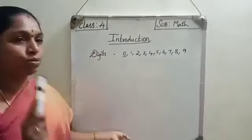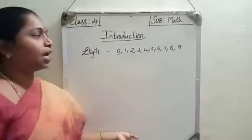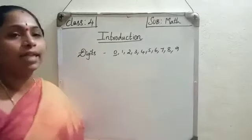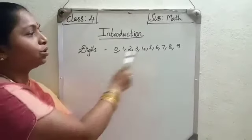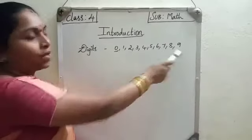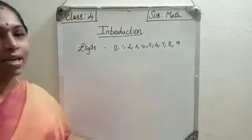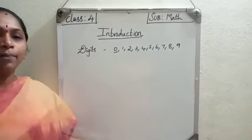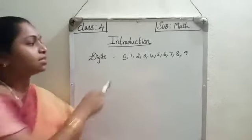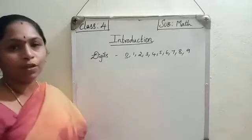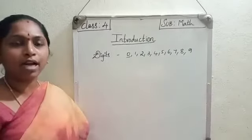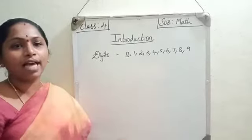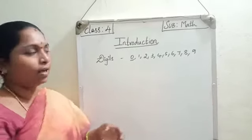A number, whether it is a 2-digit or a 3-digit number, you will be seeing only these 10 digits — that is, from 0 to 9. That means math is completely running with these 10 digits only. We cannot add any other special character in our math.